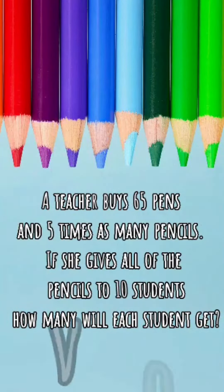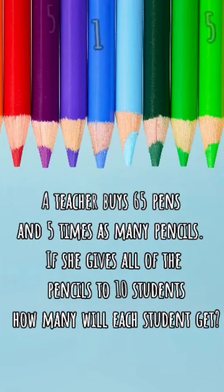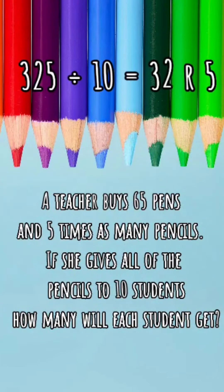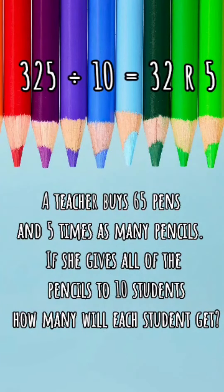325 divided by 10 — does that go in evenly? No, I'm going to have a remainder. 325 divided by 10 is 32, remainder 5.